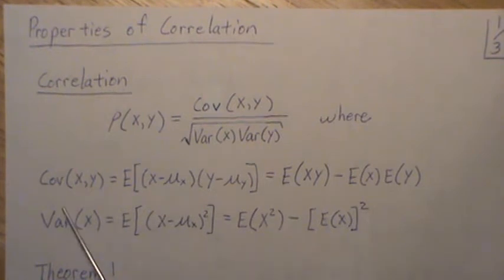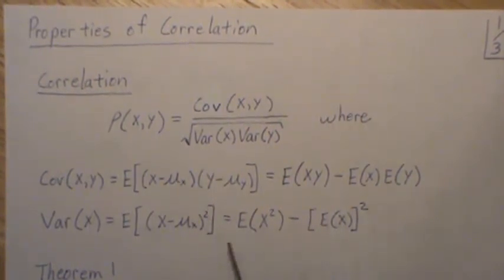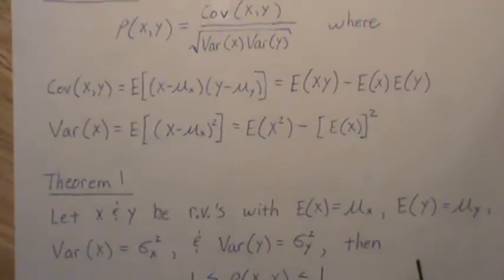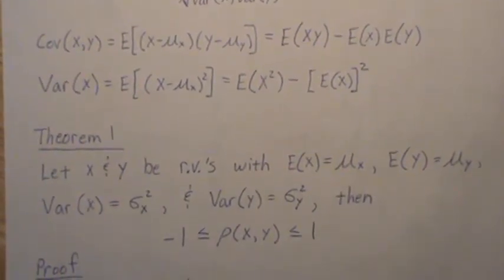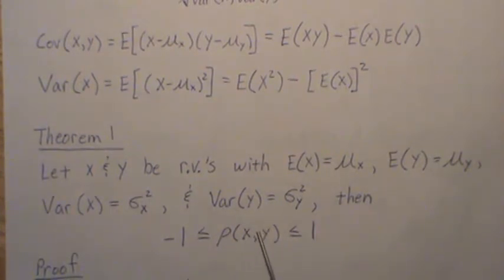Background: covariance is defined as the expected value of this cross product, which you can write like this. The variance by definition is this, and then this is the famous variance formula. So Theorem 1 is: let x and y be random variables with means mu_x and mu_y and variances sigma_x squared and sigma_y squared; then the correlation is between minus 1 and 1.